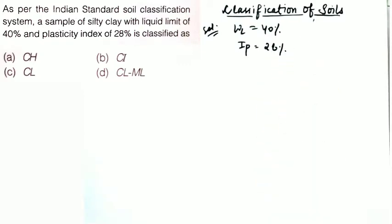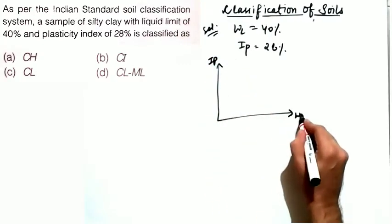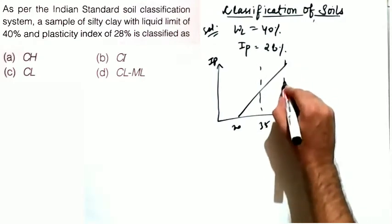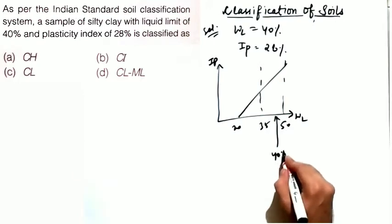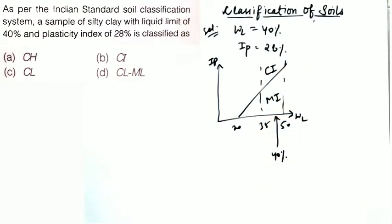We need to classify this soil per the ISC system. With WL = 40%, draw the plasticity chart with key values at 20, 35, and 50. The liquid limit of 40% lies in the intermediate zone between 35 and 50, so the soil will again be either MI or CI. No condition for organic soil or temperature susceptibility is given, so OI is ruled out.